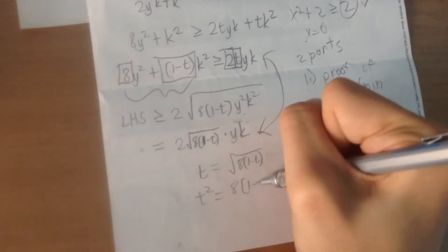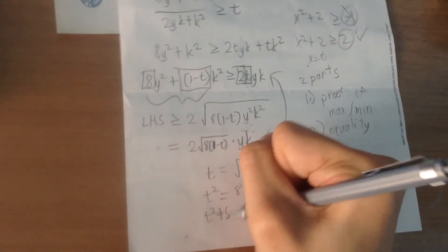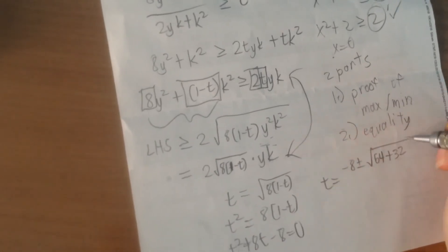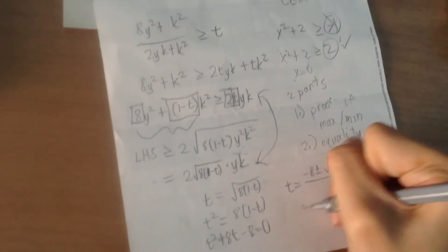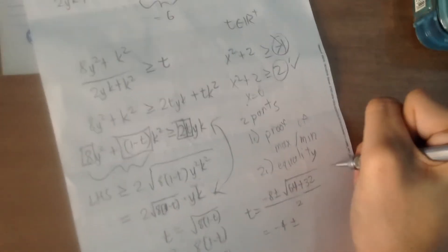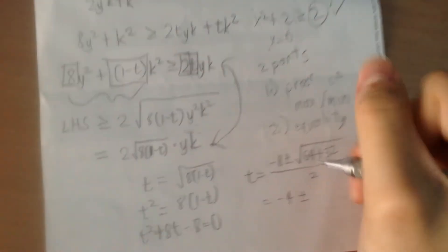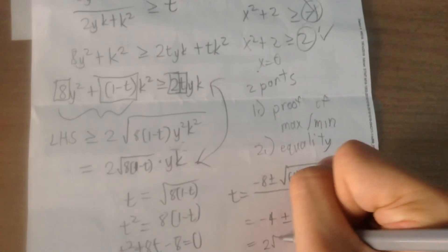So t² = 8(1 − t), which gives t² + 8t − 8 = 0. Using the quadratic formula, t = (−b ± √(b² − 4ac)) / 2a = −4 ± √96 / 2. Factoring out the 4 to cancel the 2, and simplifying √96, we get t = −4 ± 2√6. Since we want t to be positive, we take the positive root: t = 2√6 − 4.